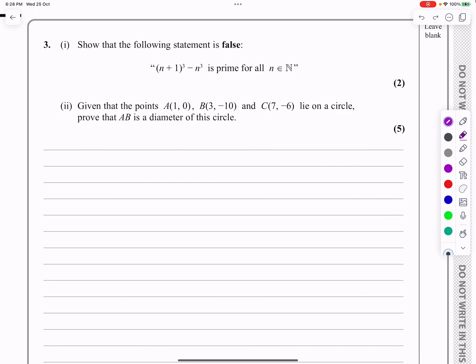So let's look at part one first of all. It says, show the following statement is false. So quite often I do those using counter example. We've got (n+1)³ - n³. And they're saying that this is prime for all natural numbers, all n = 1, 2, 3, 4, 5 and so on. But they want me to prove it's false. So I'm going to be quite systematic.